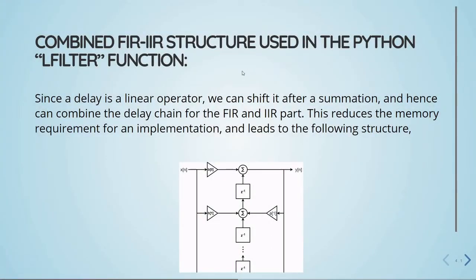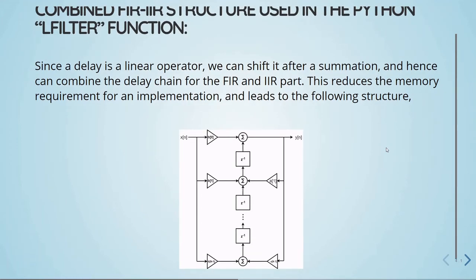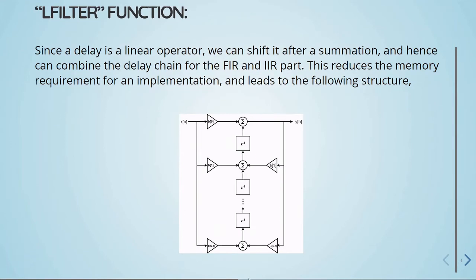We will now take a look at the combined FIR and IIR structure used in the Python function lfilter. Since the delay is a linear operator, we can shift it after summation and combine the delay chain for the FIR and IIR parts. This reduces memory requirements for an implementation and leads to the following structure: input, output, delay blocks combined for the FIR and IIR parts, and multiplications with coefficients — the A coefficients A1, A2, A3 through A N-minus-1, and the B coefficients B0, B1 through B N-minus-1.